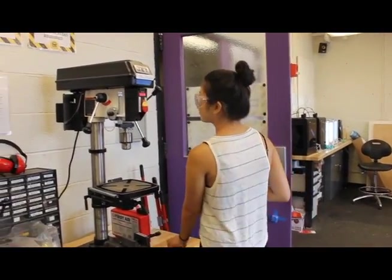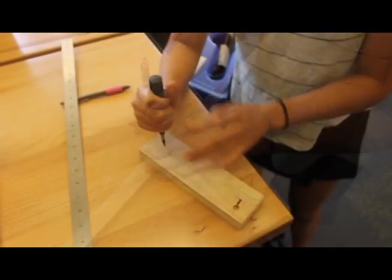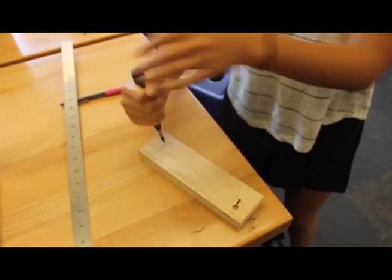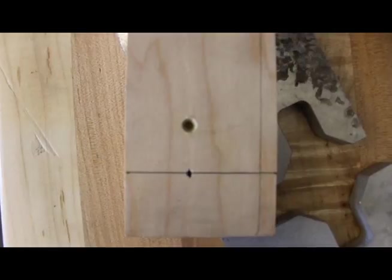We're almost ready to drill our part. First, you want to measure and mark where you want to drill holes in the material. A dimple created with a center punch or a pilot hole created with a center drill is needed to guide the drill bit.